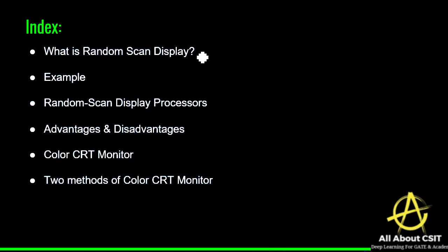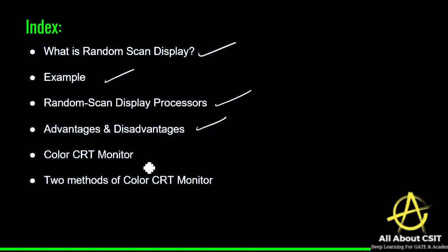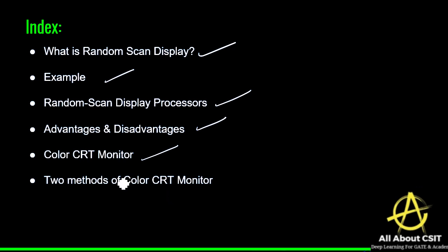In this video, we'll cover topics like what exactly random scan display is, with an example, the random scan display processor architecture, its advantages and disadvantages, what exactly the color CRT monitor is, and the two different methods of color CRT monitor: beam penetration and shadow mask. By the end of this video you will get clear clarity on what exactly random scan display is.